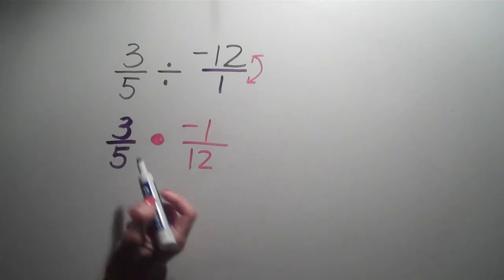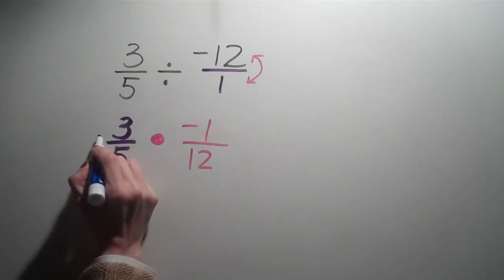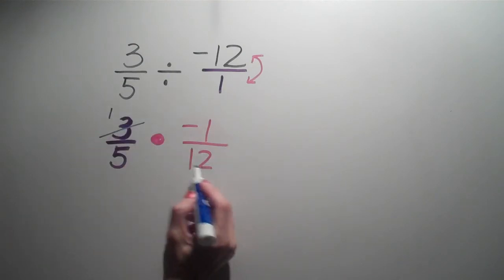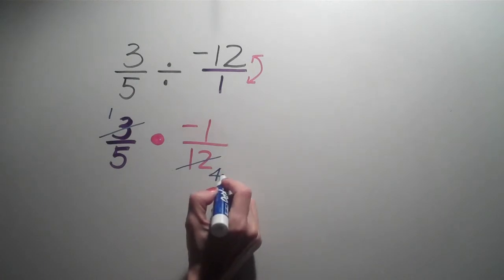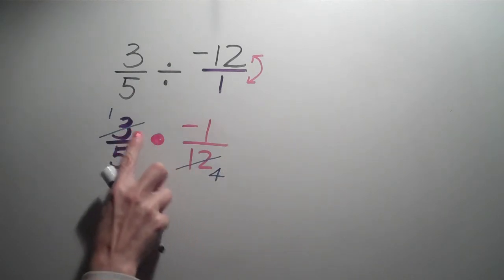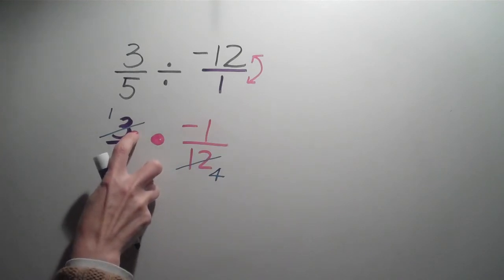Well, now all that's left to do is cross-reduce. 3 divided by 3 is 1, and 3 also fits into 12, right? So 12 divided by 3 is 4. We're looking at the number that the 2 here have in common, and we determined, well, that was 3.